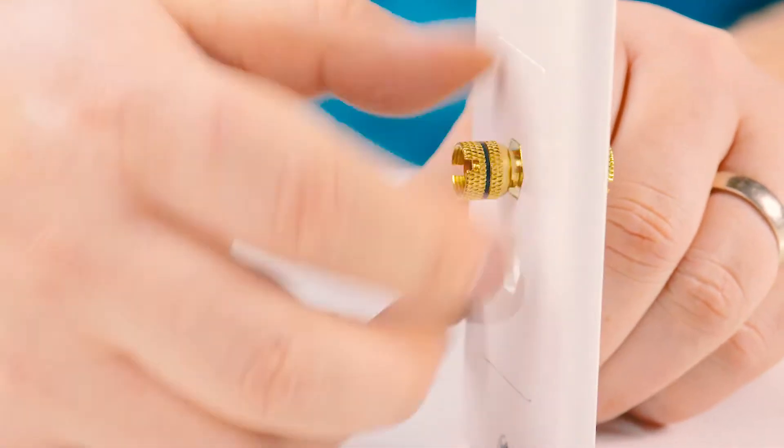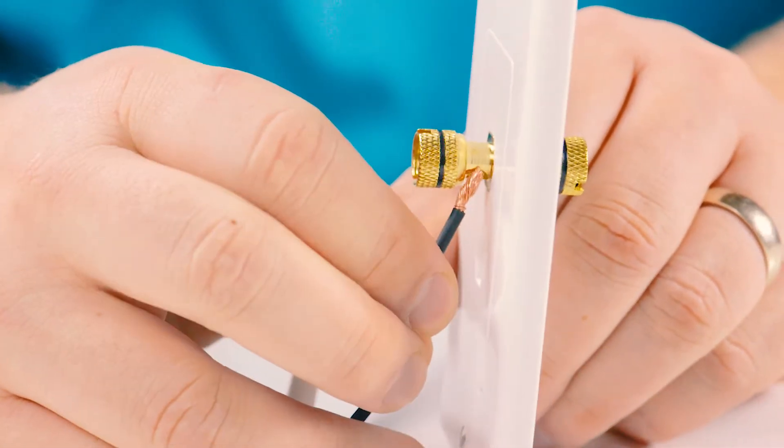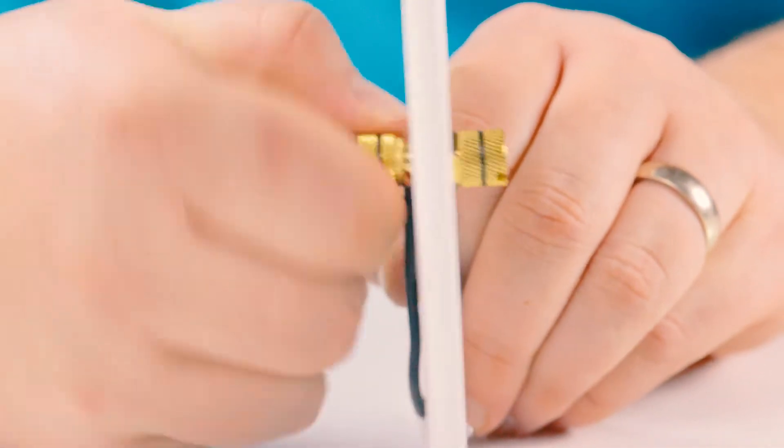The binding post can be used with bare cable by inserting the speaker wire into the small opening beneath the head and then screwing it back down.